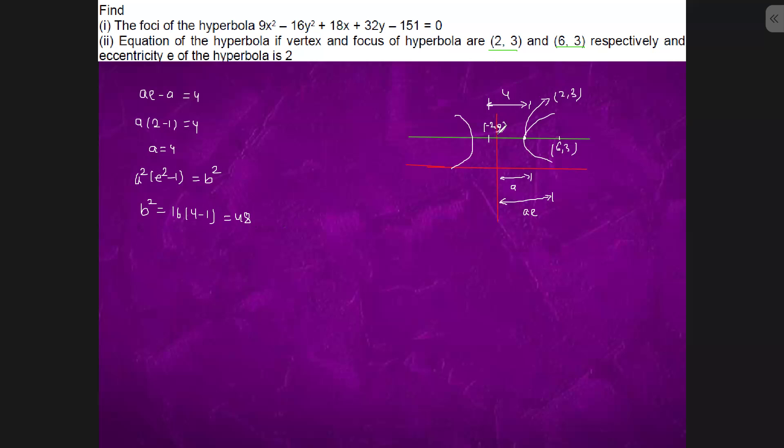And it will be minus 2 comma 3. It is (x plus 2)² upon a² 16 plus (y minus 3)² upon 48 equals to 1. This is the equation of required hyperbola.